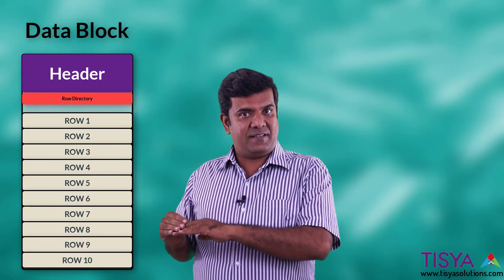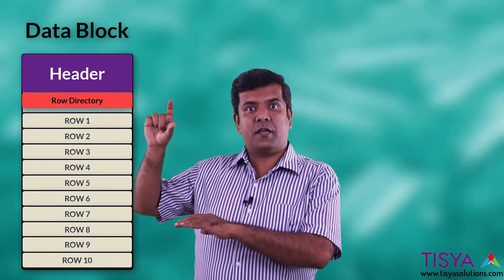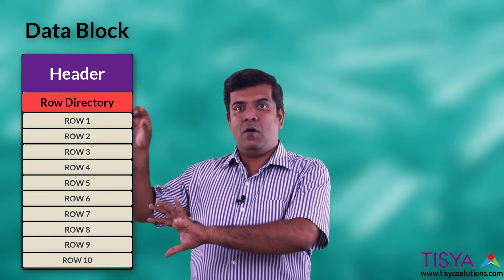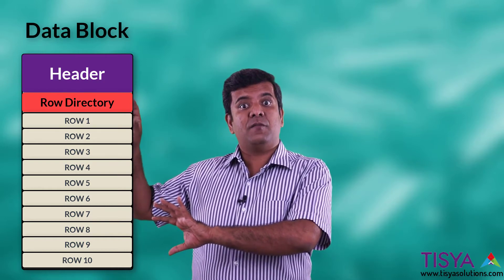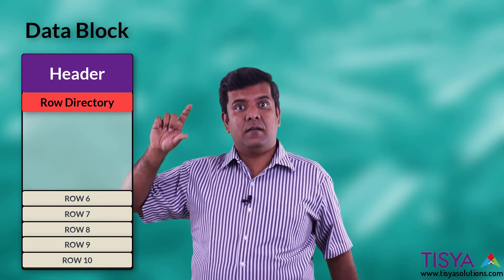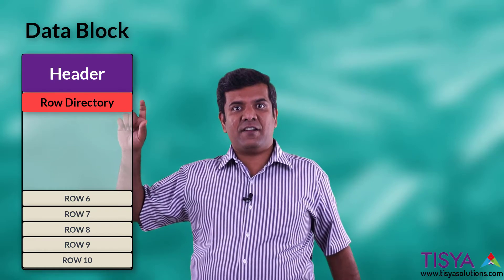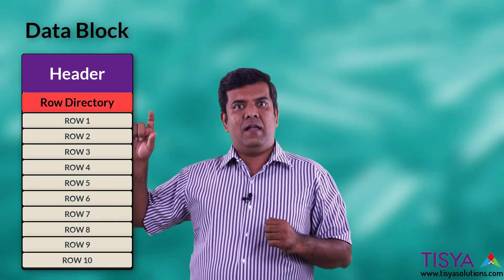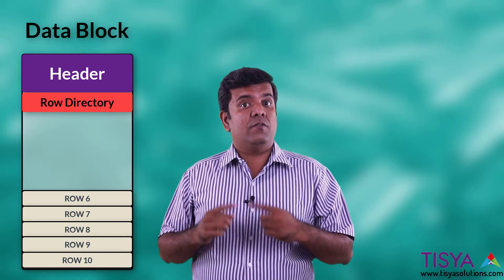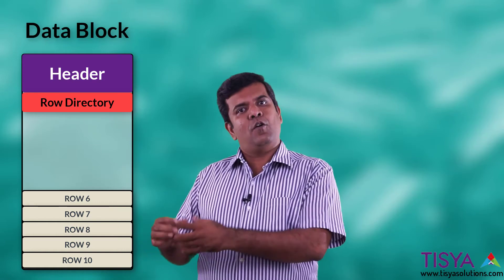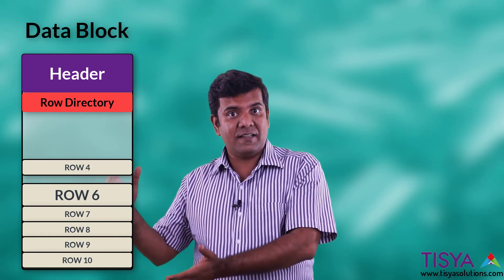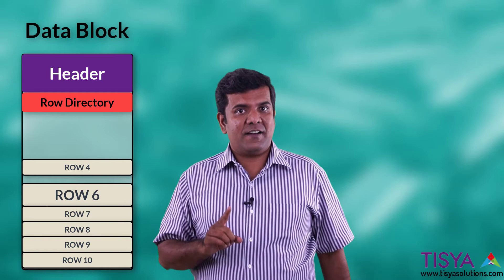Something important to note: if the row directory grows — for example, if ten different rows existed in one block — the row directory would grow to occupy space for ten row entries. If you delete five rows, the row directory size is still reserved and will not shrink. However, that space can be reused when you insert more rows back. When you insert the eleventh row, the directory may grow again. The row directory space is not reclaimed on delete, but the space occupied by the actual row data is reclaimed and can be reused by other rows or expanding updates.